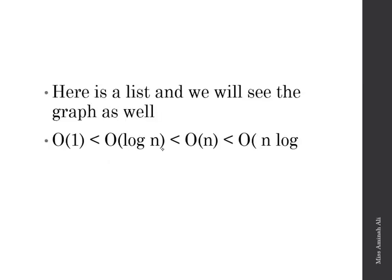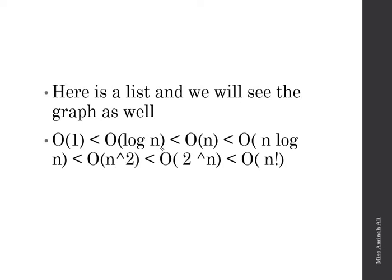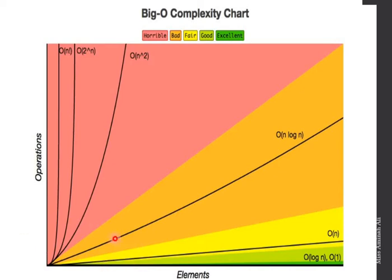Here is a list of different Big O notations: O(1) constant time, O(log n) logarithmic, O(n) linear, O(n log n), O(n²), O(2^n), and O(n!) — N factorial. This is the full range from least to most time. We can see from the Big O complexity chart that O(1) and O(log n) have very low growth rates, then O(n), then O(n log n), then O(n²), then 2 raised to power n, and finally n factorial.